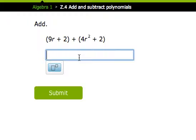So we have (9r + 2) + (4r² + 2). So I have 4r squared. I don't have any other r squared, so I know my answer is going to have 4r² in it. So you see this little exponent button down here,